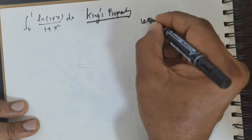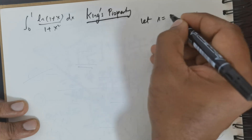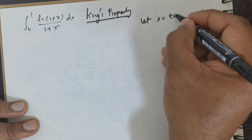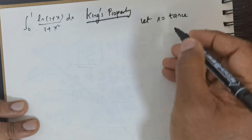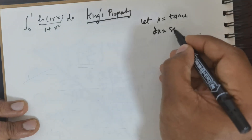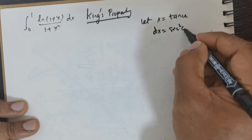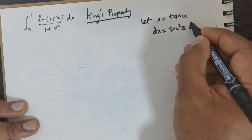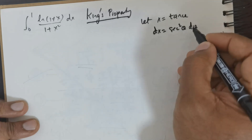The formula is what I wish to use. I would like to take x equal to tan θ, so dx will be the differential of tan θ, which is sec²θ dθ.